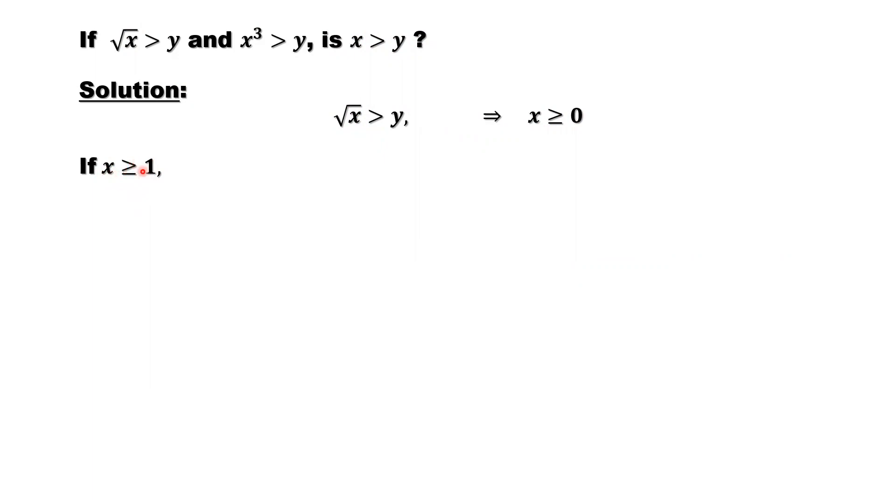When x is bigger than or equal to 1, this implies x is greater than square root of x. What does this mean? We can see an example. x bigger than 1, for example, x equals 4. Is 4 bigger than square root of 4? Square root of 4 is 2. So 4 is bigger than 2. It is true.